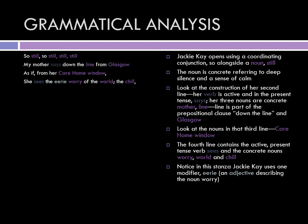Right away we're seeing there are a lot of nouns: care home, window, line, Glasgow, worry, world, chill. We only have two verbs, and they are active and present tense — 'says' and 'sees.' We have one modifier, 'eerie,' and it is modifying the word 'worry,' making it an adjective. She has only one modifier — a modifier is just a fancy grammatical word for description.